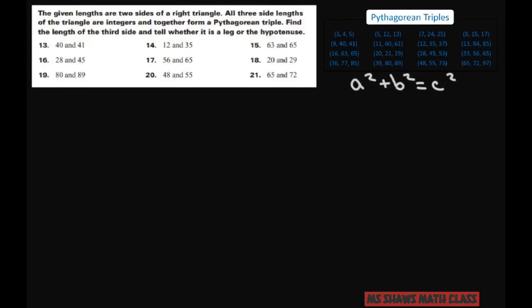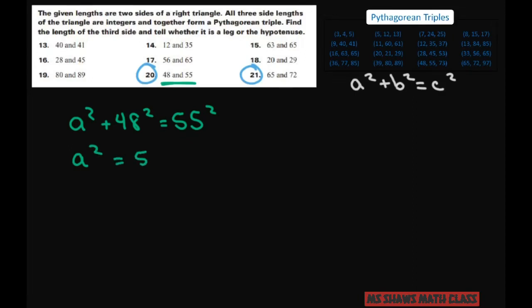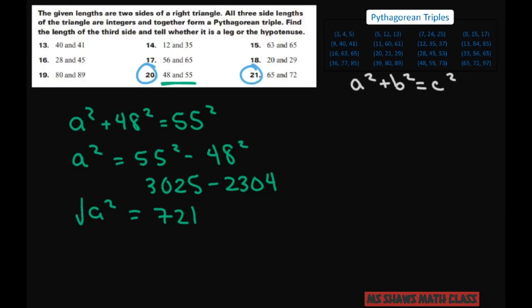Let's try a² + 48² = 55². So a² = 55² − 48² = 3,025 − 2,304 = 721. Take the positive square root — 721 gives a decimal. So that means we did it wrong. Let's see where our answer is and try it again.